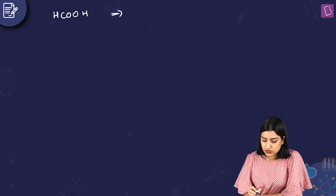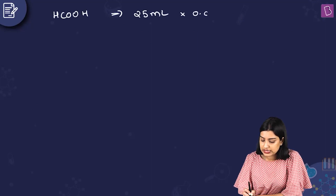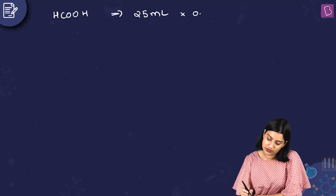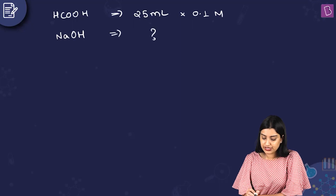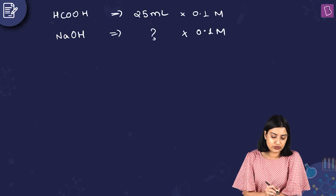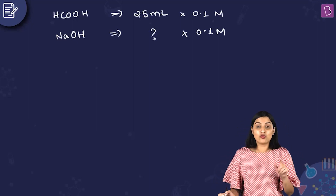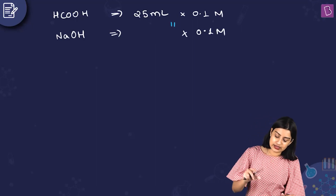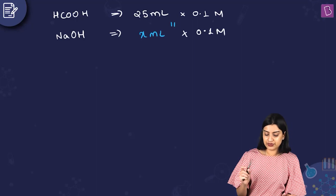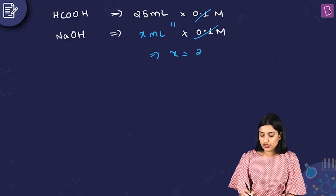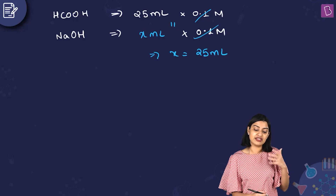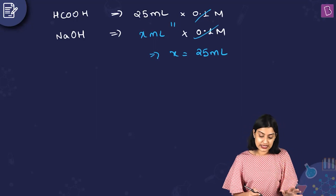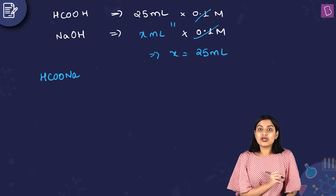We have formic acid solution: 25 ml of 0.1 molar. NaOH is 0.1 molar with unknown volume x ml. At the equivalence point, both have the same n-factor, so we can equate them. Cancelling gives x = 25 ml, so the volume of sodium hydroxide used is 25 ml. The salt formed by the reaction of formic acid and sodium hydroxide is sodium formate, HCOONa.